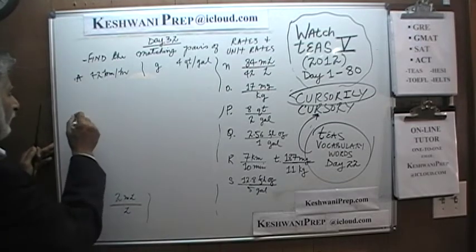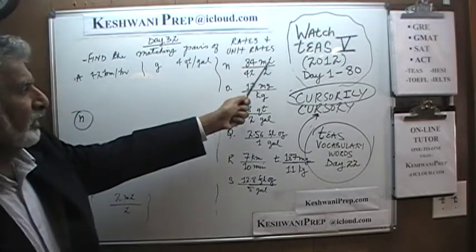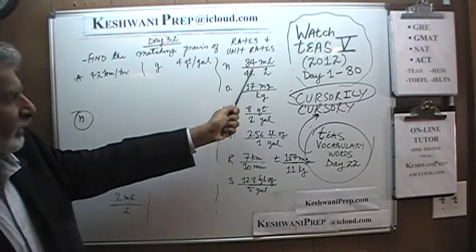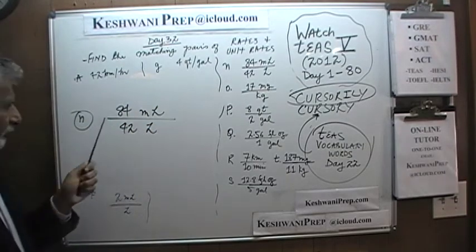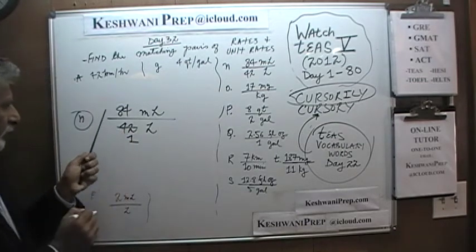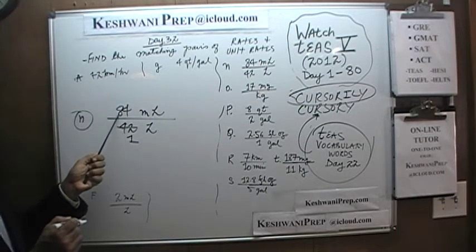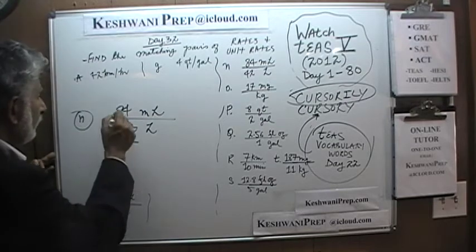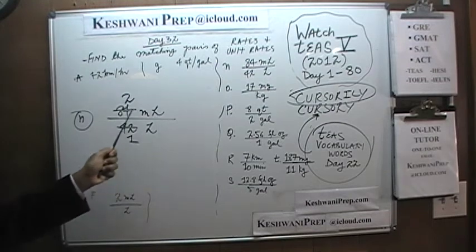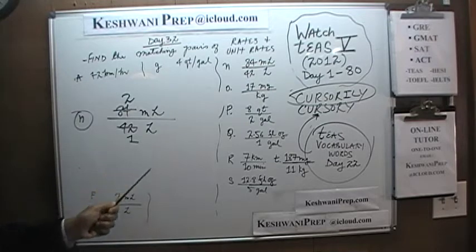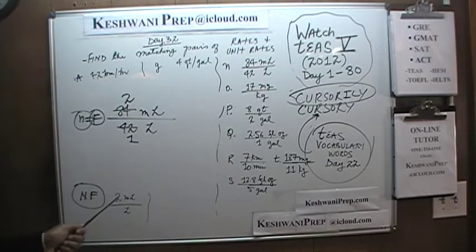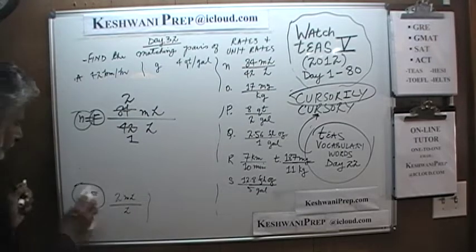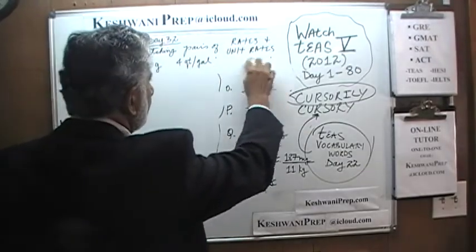Entry N says 84 milliliter per 42 liters. We need 1 liter at the bottom, so divide top and bottom by 42. 42 ÷ 42 = 1, and 84 ÷ 42 = 2, since 84 is exactly two times 42. That gives us 2 milliliter per liter. Find the matching entry — right there, entry F says 2 milliliter per liter. N matches F. We can erase those two.